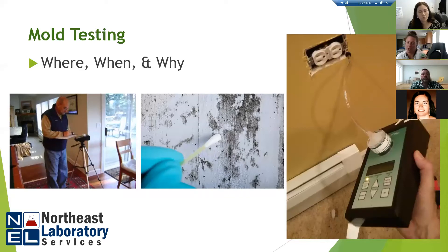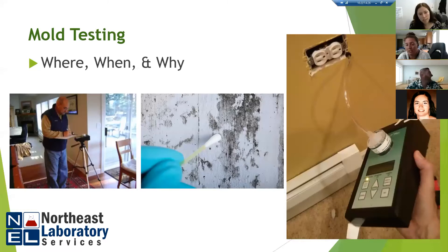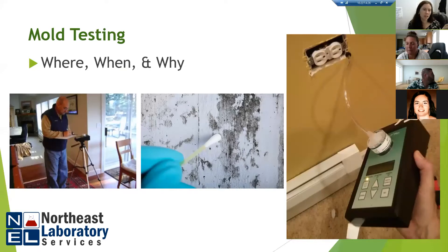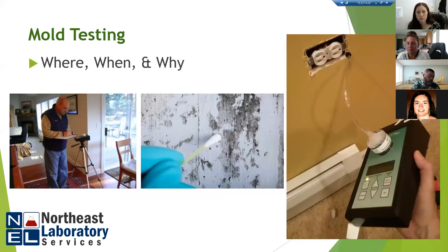After remediating the source — in this case a crawl space or cellar — the question is whether to retest and who to call. Some people hire the same inspector; others hire an independent person who wasn't involved in the remediation. That's actually better because it's more objective. The industry calls this a post-remediation verification, or PRV. Most people will hire someone independent to just come in, confirm it's been remediated, take a test, and leave.